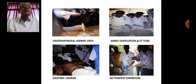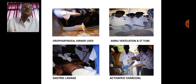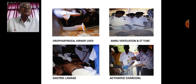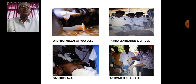An oropharyngeal airway can be used if there is breathing difficulty. Suction out excessive secretions to ensure the patient can breathe comfortably. If required, use ambu bag ventilation or endotracheal intubation.